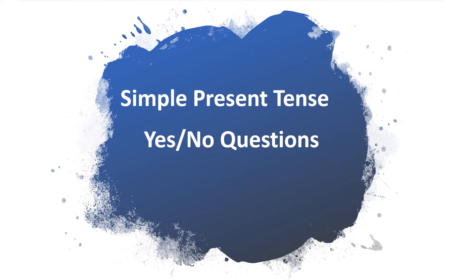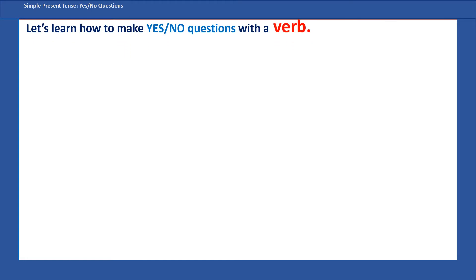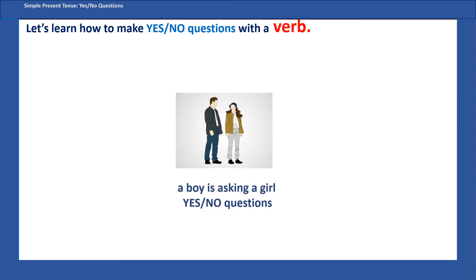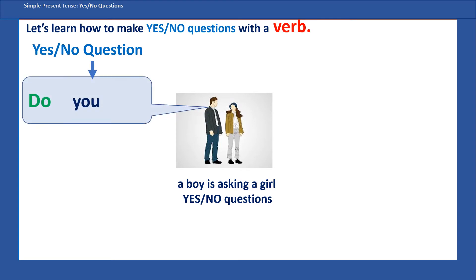Simple present tense yes/no questions. Now let's learn how to make yes/no questions with a verb. A boy is asking a girl yes/no questions, and because he is asking a question with a verb, we say 'do you.'